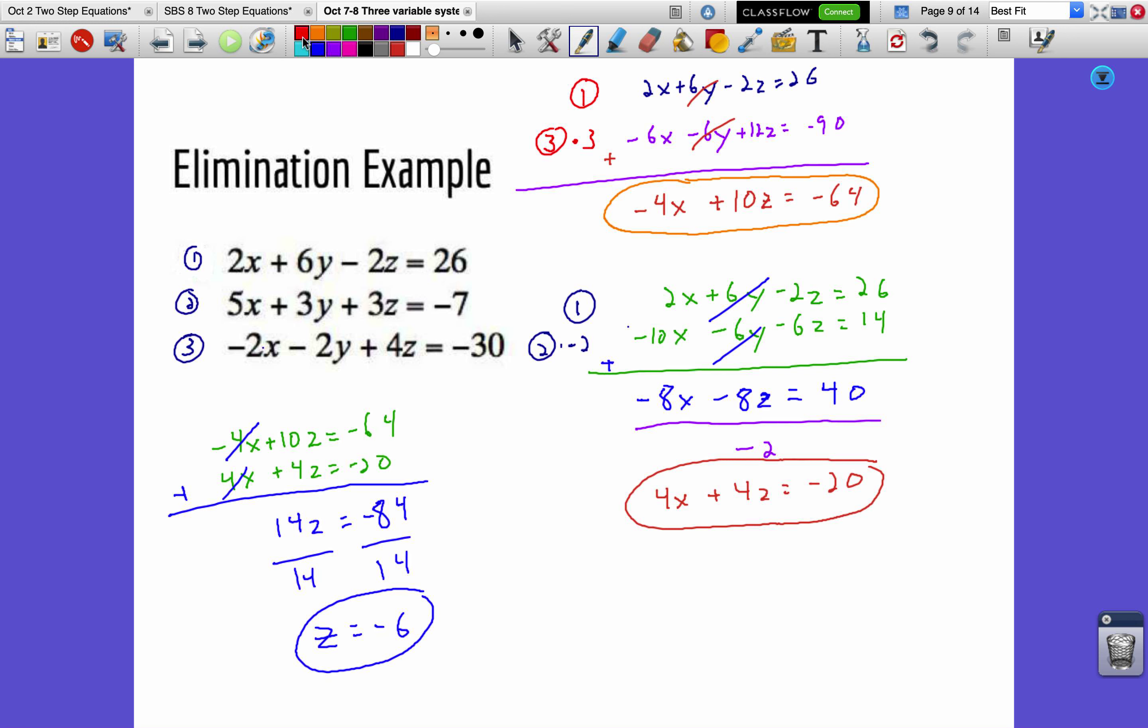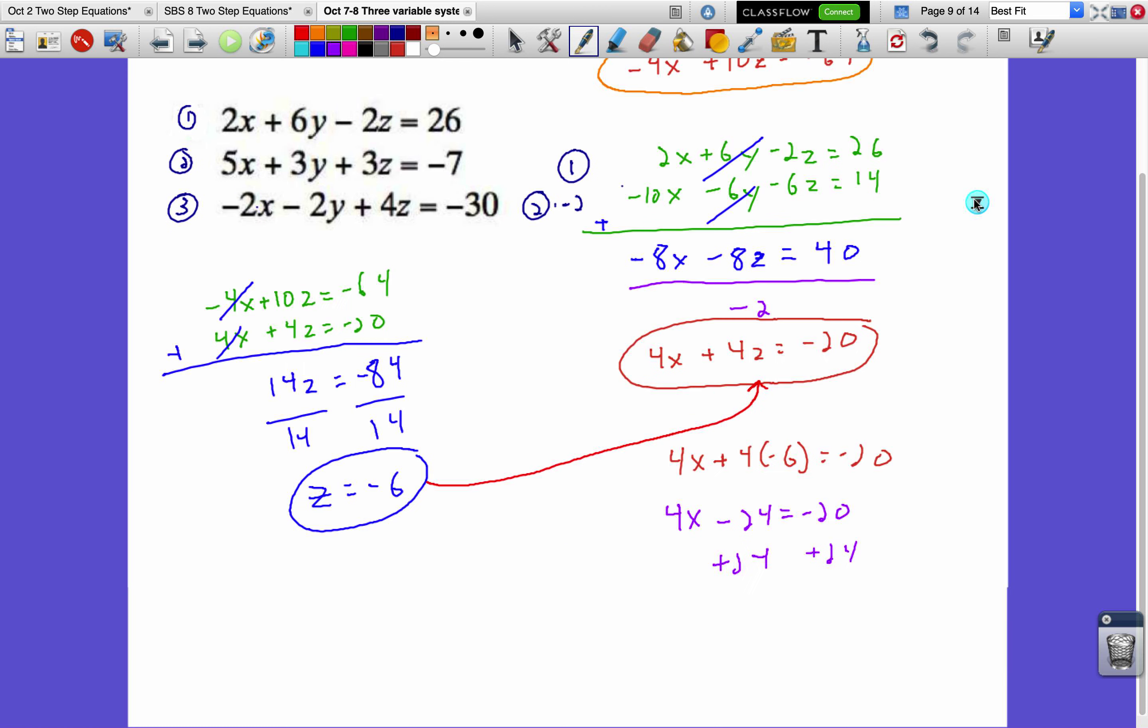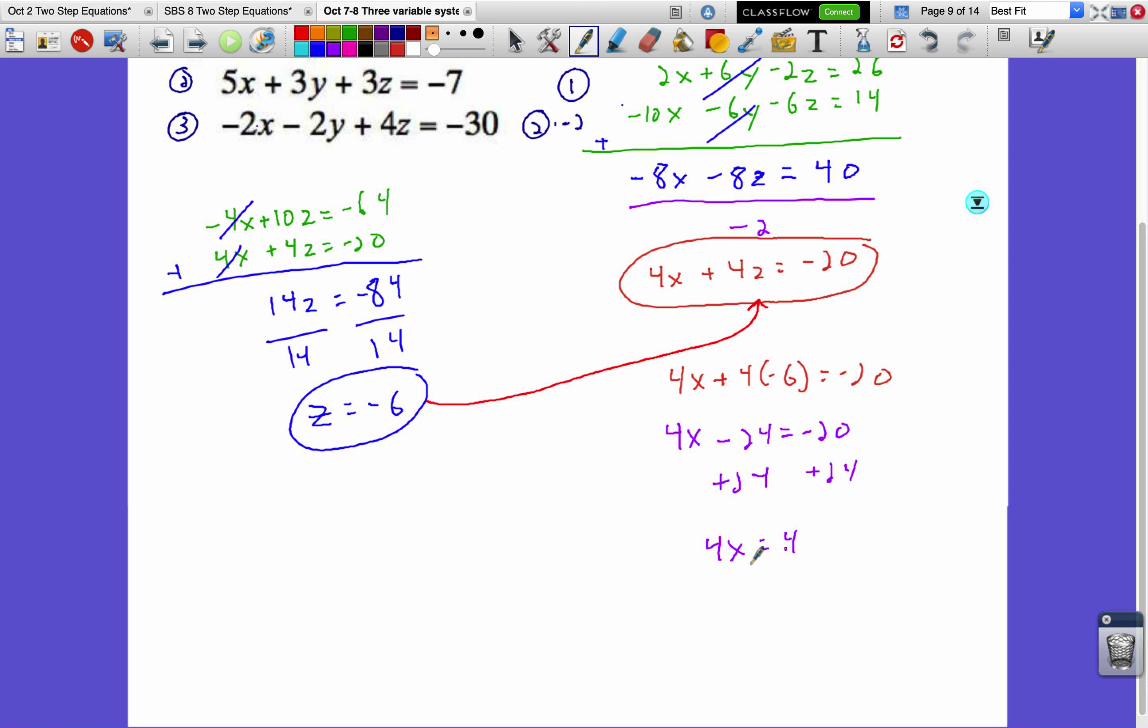All right, but that's only one of my first variables, there's still two others. So I'm going to take this, I'm going to plug it back into one of the circled equations, like right here, to solve for x. You can't just plug it back into one of the originals, because you'll still have two missing variables. But here we can plug it back in, we get 4x plus 4 times negative 6 equals negative 20. 4x minus 24 equals negative 20. Add 24 to both sides. 4x equals 4, divided by 4, x equals 1, circle that.